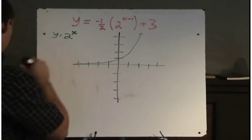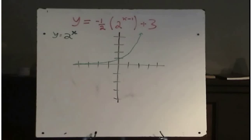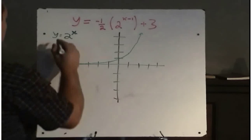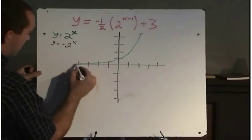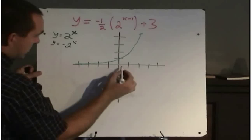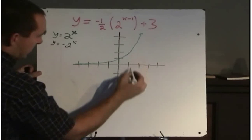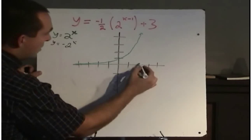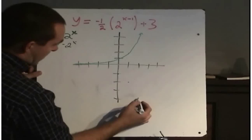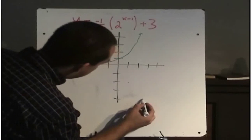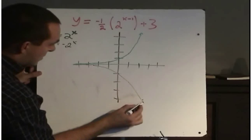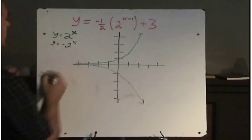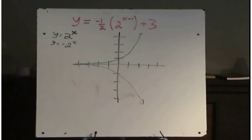I don't know if I have enough colors here or not. Let's do this one in black. So reflecting in the x-axis, 2 up, 2 down, 4 up, 4 down. So there's y equals negative 2 to the power of x.